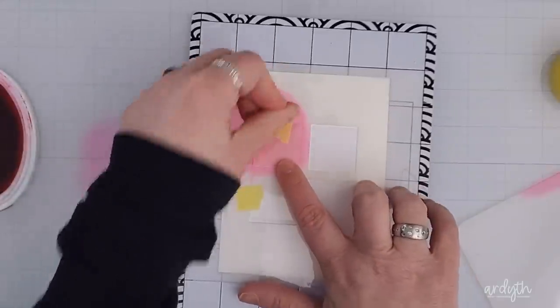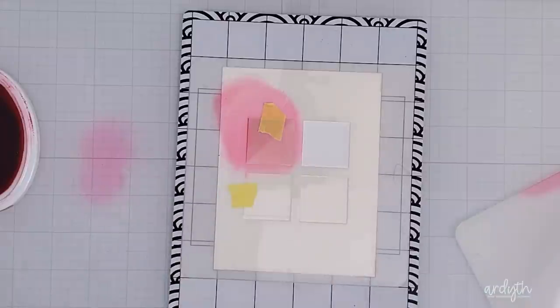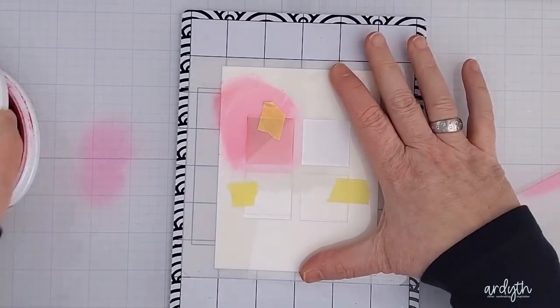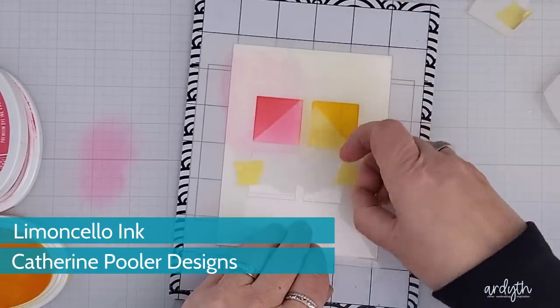Then I shift my square mask to open up the next hole. I also cleaned away some of the pink ink so that my limoncello ink won't pick any of that up and get contaminated. Again I do two layers of the ink but this time I mask the opposite portion of the square.